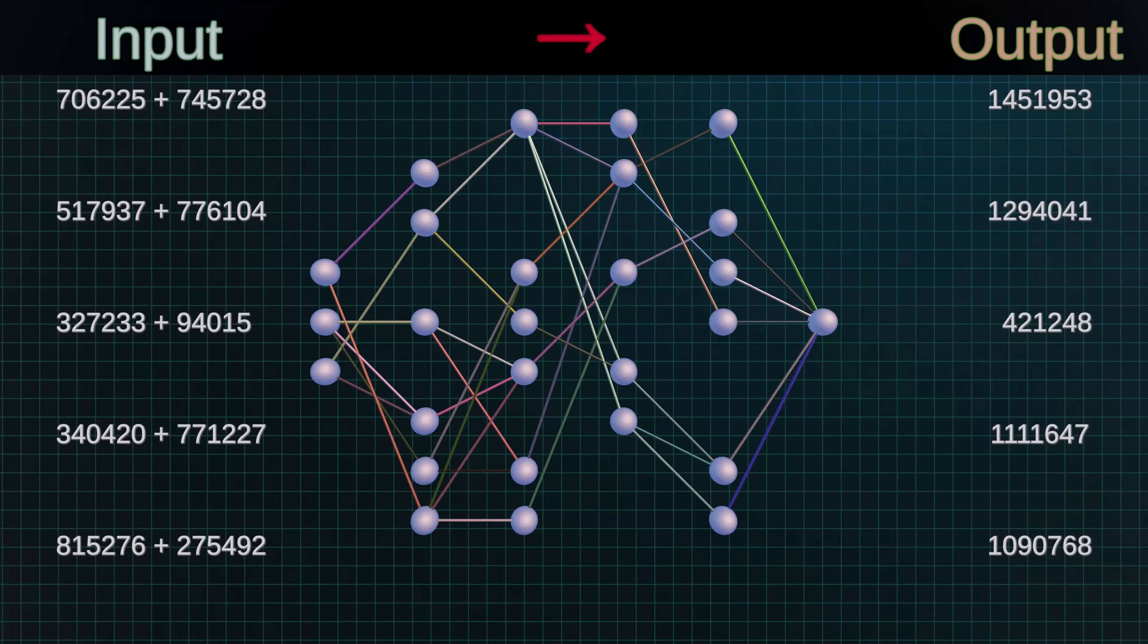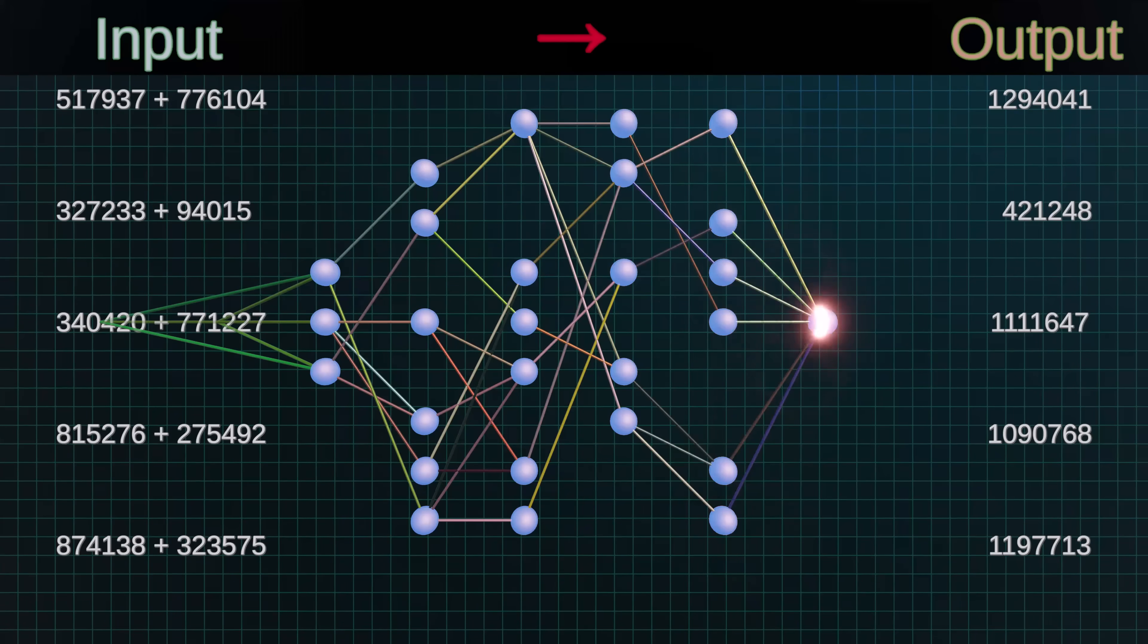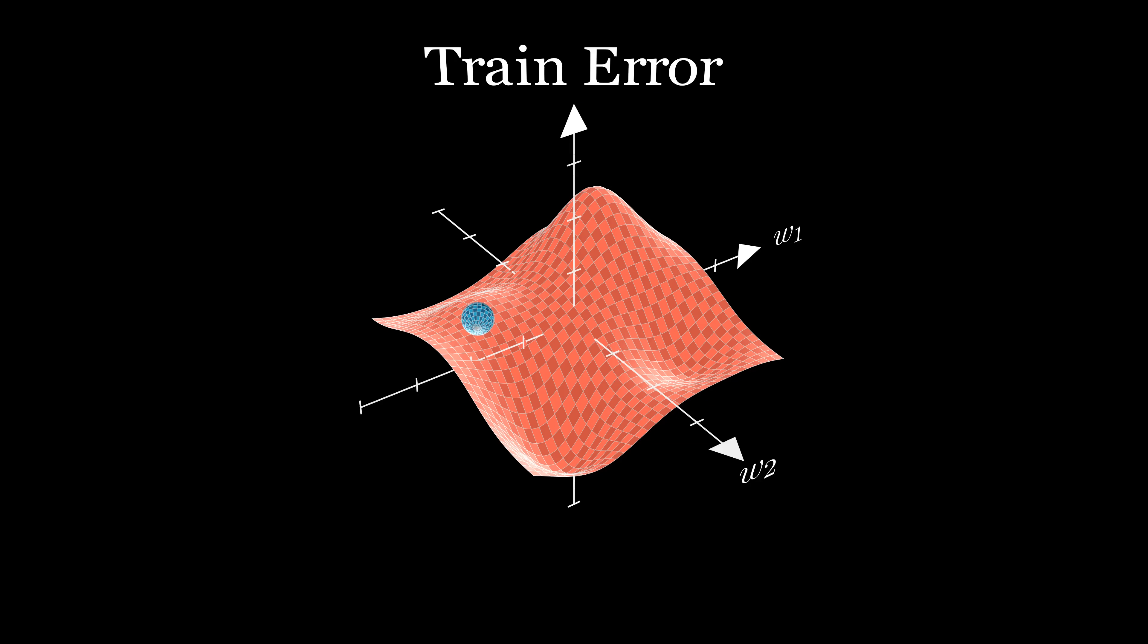To understand what's going on here, you need to know a bit about the way that neural nets are trained: gradient descent. The gist of it is that for each training example, you make a small change to every weight in order to make the net's output closer to the label. We like to visualize this process as a ball rolling down a hill. The goal is to move the ball to the lowest point on the landscape. That corresponds to the weights with the lowest training error. Gradient descent moves the ball just like an actual ball rolling due to gravity, in the direction of steepest descent.